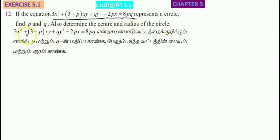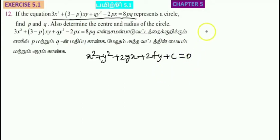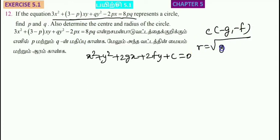For the general equation of a circle, the center is given by (-g, -f), and the radius r is equal to the root of g squared plus f squared minus c.